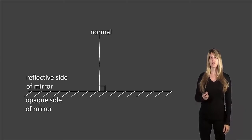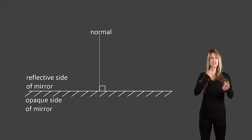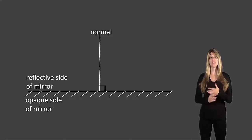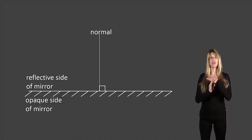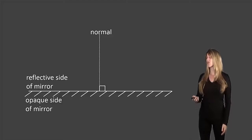The next part is the normal. This is something that's imaginary — you don't normally have straight lines pointing out of the mirror at you. It's a line that's perpendicular to the mirror, which means it's at 90 degrees to the mirror. We draw this to help us calculate angles, but it does not actually exist.